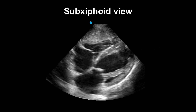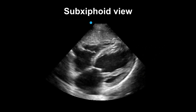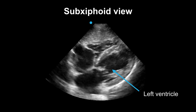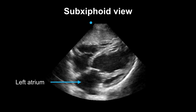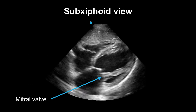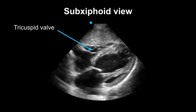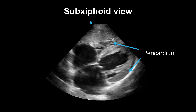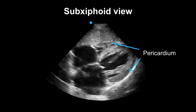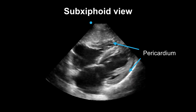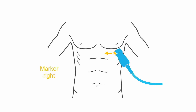Again to orient: the right and left ventricles, the right atrium, left atrium, your mitral valve, and your tricuspid valve. Don't forget that your bright white hyperechoic line will surround your heart — that will be your pericardium.